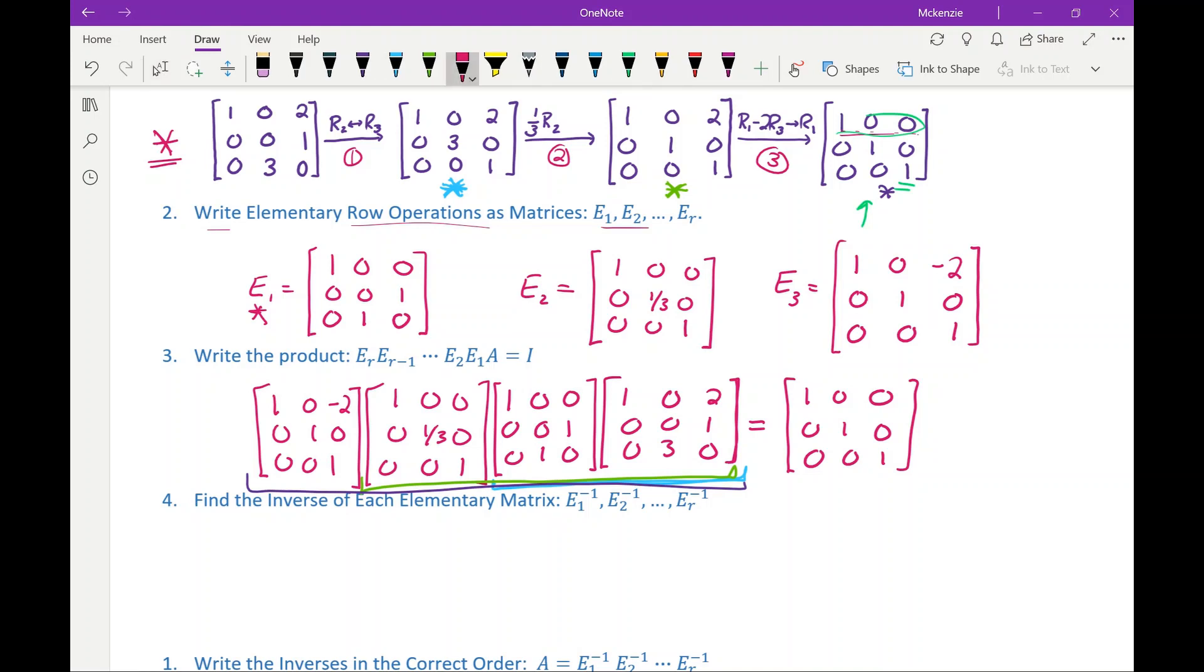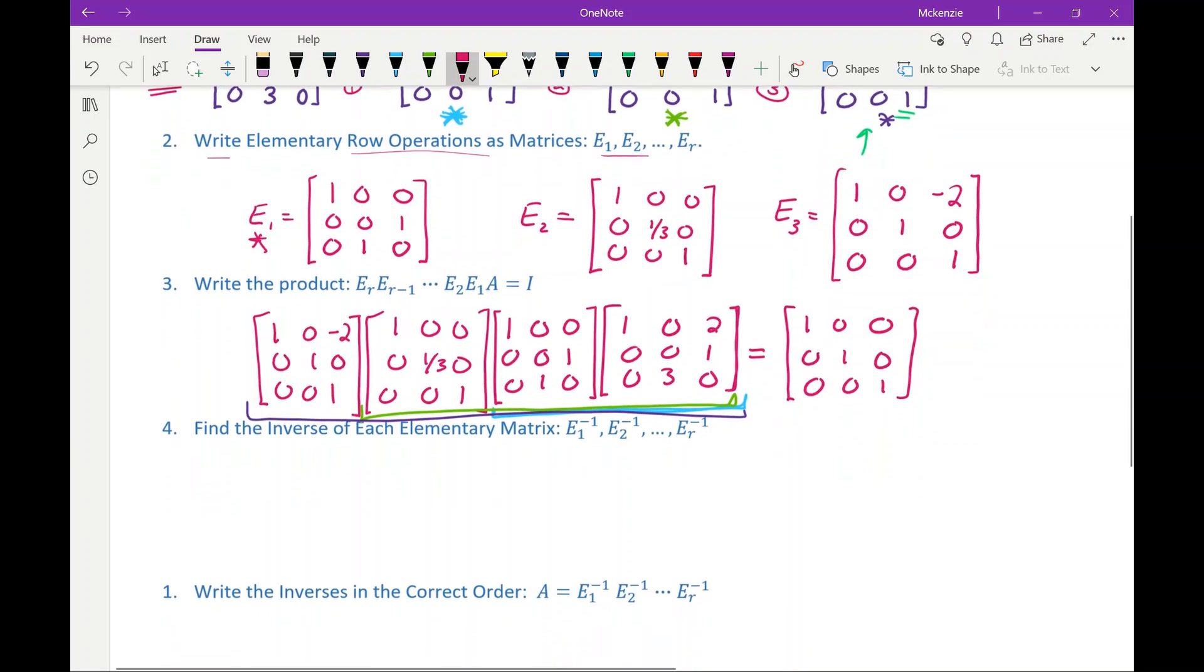So the next step in writing A as the product of elementary matrices is we need to find the inverse of each of these elementary matrices. E1, E2, and E3. So E1 was the first one that we multiplied A by. The inverse of swapping two rows, the way that we undo swapping two rows is swapping them back. So the inverse of E1 is just the same thing as it was to start with.